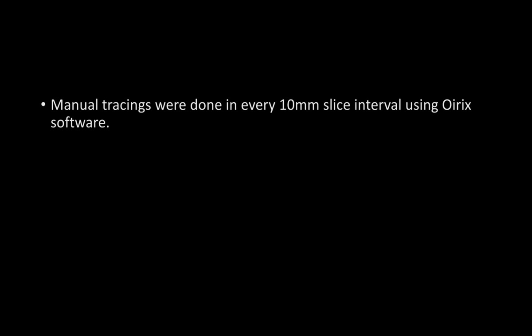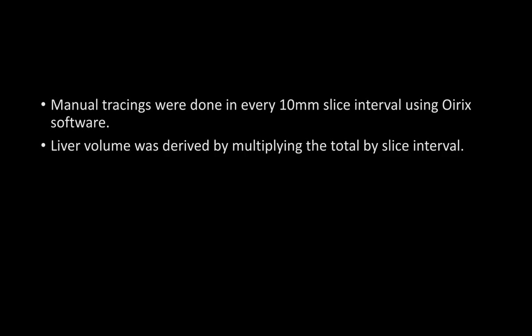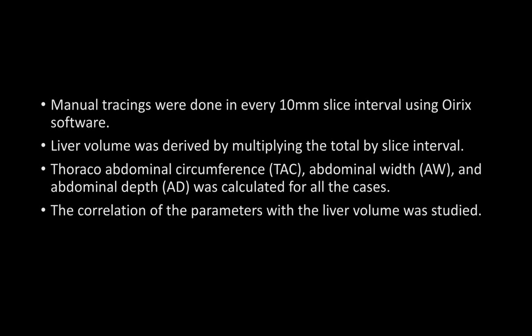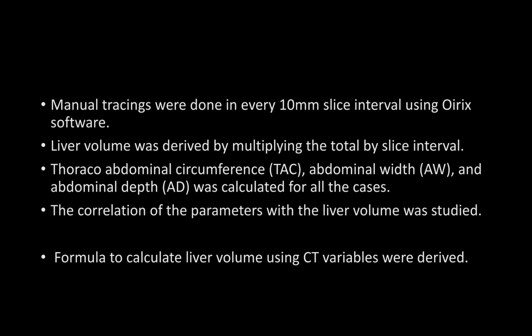Manual tracings were done at every 10 mm slice interval using OSIRIX software and areas were derived at these levels. Liver volume was then derived by multiplying the total area by the slice interval of 10. Thoracoabdominal circumference, abdominal width, and abdominal depth were calculated for all cases and expressed in millimeters. The correlation of these parameters with liver volume was then studied, and a formula was derived using regression models.